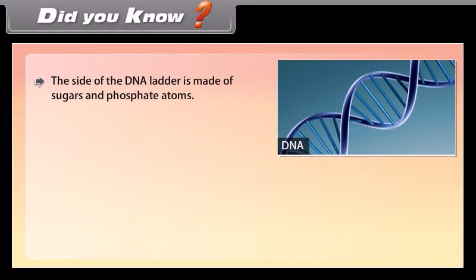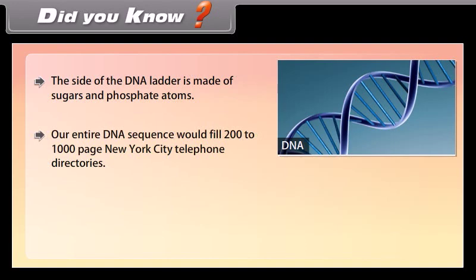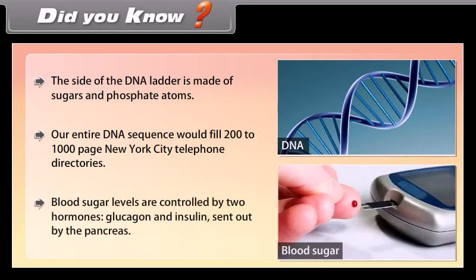Did you know? The side of the DNA ladder is made of sugars and phosphate atoms. Our entire DNA sequence would fill 200 to 1000 New York City telephone directories. Blood sugar levels are controlled by two hormones — glucagon and insulin — sent out by the pancreas.